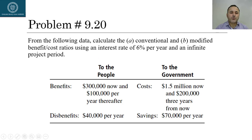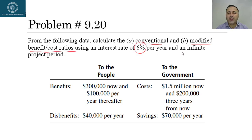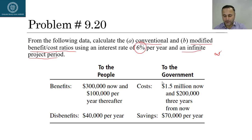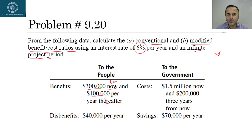Problem 9.20: From the following data, calculate (1) conventional and (2) modified benefit-cost ratio using an interest rate of 6 percent per year and an infinite project period. The project has no defined life — it is good for infinity. Benefits to the people are three hundred thousand dollars now at t=0, and one hundred thousand dollars per year thereafter, meaning forever. Dis-benefits are forty thousand dollars per year, also forever.